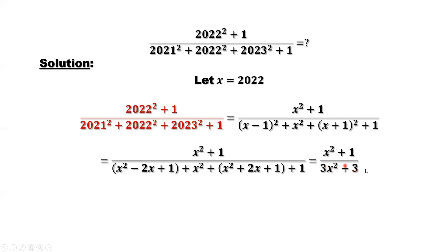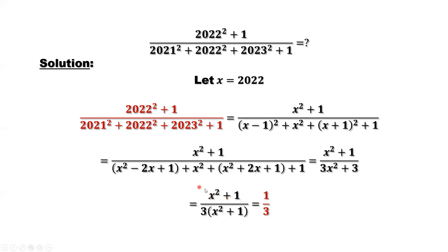From the denominator, you can see 3 is a factor. We can factor 3 out, giving 3 times (x squared plus 1). The numerator is x squared plus 1. We can cancel x squared plus 1 from both numerator and denominator, leaving 1 third.